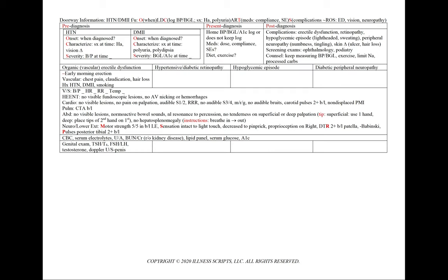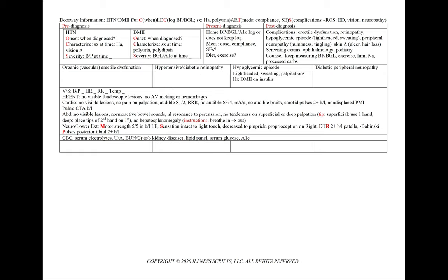We'll add to our workup a genital exam, TSH, T4, FSH, LH, testosterone, and a Doppler ultrasound of the penis. In hypertensive or diabetic retinopathy, we'll see progressive visual loss and headache in hypertension, and numbness and tingling in diabetes. The patient will have a history of hypertension, diabetes, or smoking, and we'll add a dilated fundus exam. In a hypoglycemic episode, we'll see lightheadedness, sweating, and palpitations in a patient with diabetes on insulin.